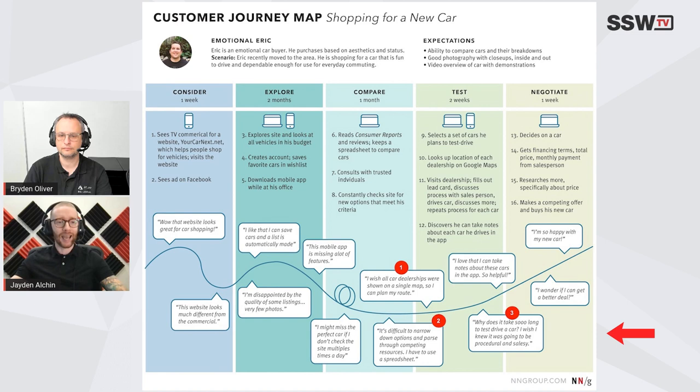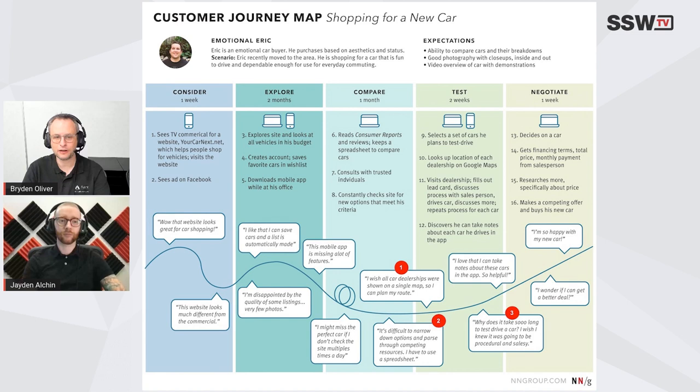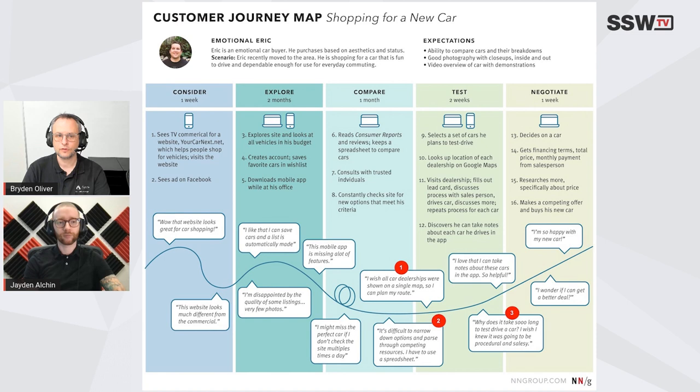The emotional curve is really helpful for finding pain points and places for improvement. Where it goes down, you might try to intervene somehow and add something to help the user. Wherever it goes down, especially if you can capture those thoughts and feelings accurately, it's really easy to see room for improvements and opportunities for growth.